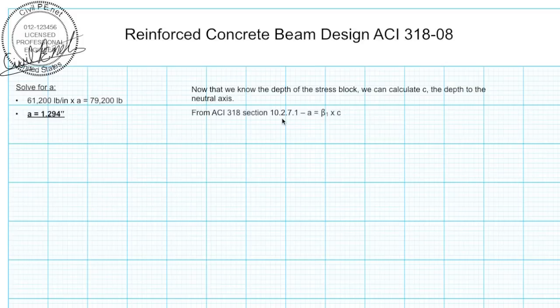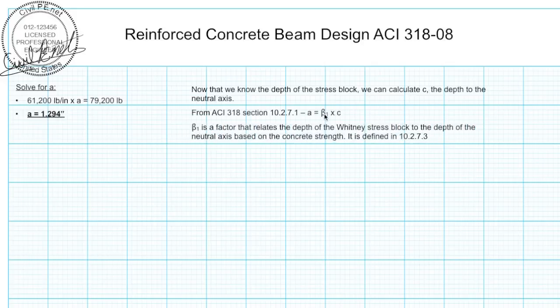From section 10.2.7.1 of ACI 318, we get that a is equal to beta1 times c. Beta1 is a factor that relates the depth of the Whitney stress block to the depth of the neutral axis based on the concrete strength. ACI 318 states under 10.2.7.3 that for f'c between 2500 and 4000 PSI, beta1 shall be taken as 0.85.